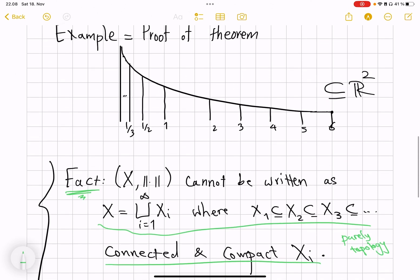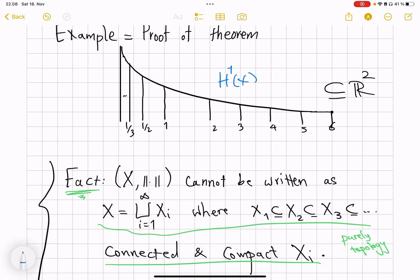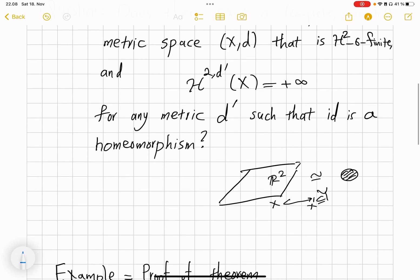Therefore, this property won't change, therefore if you homeomorphically change the distance, this cannot all of a sudden turn from infinite to finite. So here H^1 of this space is infinite but again because of this homeomorphic invariance of that property, H^1 with respect to any other distance which doesn't change the topology will still be infinite.